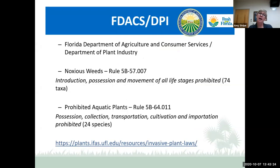The last list is the FDACS DPI list. The noxious weeds list states that introduction, possession, movement, and all life stages are prohibited — about 74 species. The prohibited aquatic plant list states that possession, collection, transportation, cultivation, and importation are prohibited — about 24 species on that list.